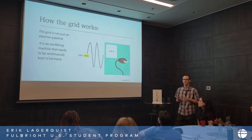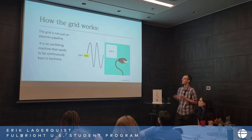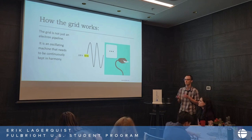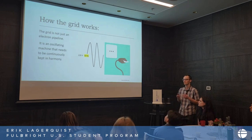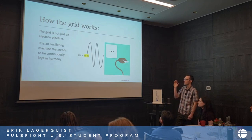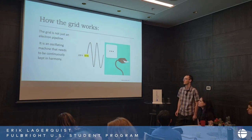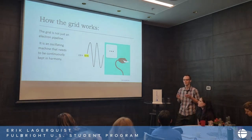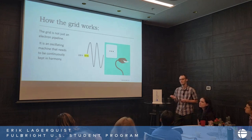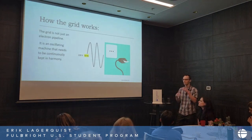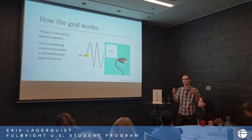I wanted to start super basic. The grid is not just a source of electrons — we can think of it as an oscillating machine that needs to be kept in harmony. We're kind of aware of this when we come to a different country and wonder what adapter we need, and what it means that it's 50 hertz here and not 60 hertz. I'm grateful Makoto gave us a primer on electromagnetic waves, because when you plug in your phone, you're tapping into the electromagnetic wave that is the entire grid, oscillating at 50 hertz.